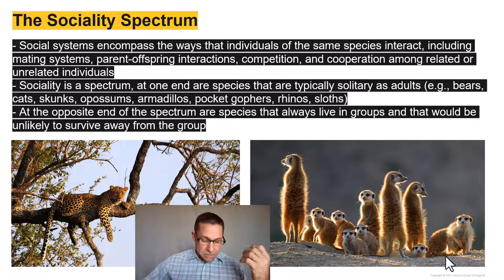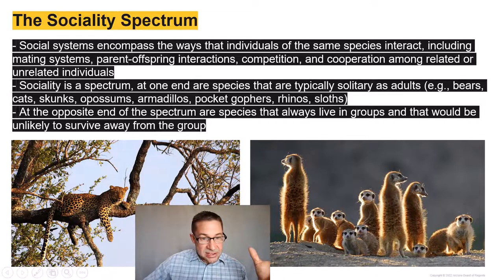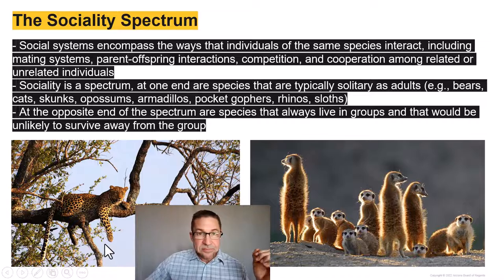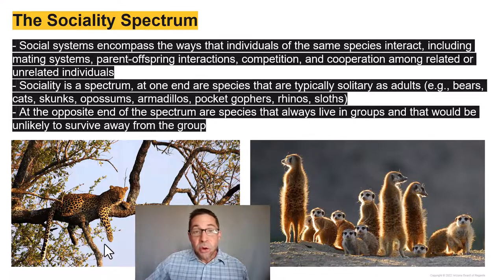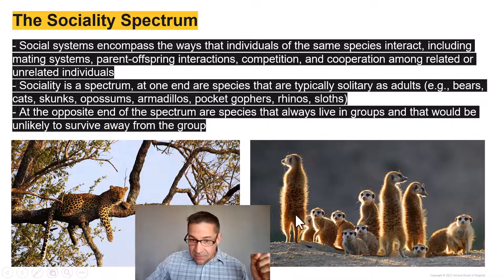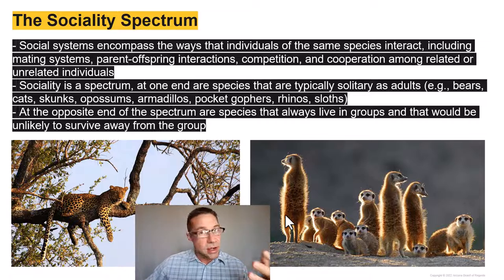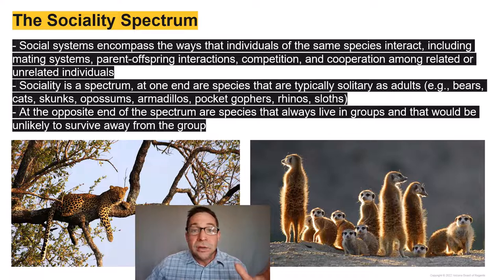It's more appropriate to think about sociality on a spectrum. At one end we have species that are solitary as adults, like this leopard hanging out in a tree. Other solitary species as adults include bears, skunks, opossums, armadillos, pocket gophers, and the irascible rhinos. At the opposite end of the spectrum are species that always live in groups — in fact, they would be unlikely to survive away from their group.